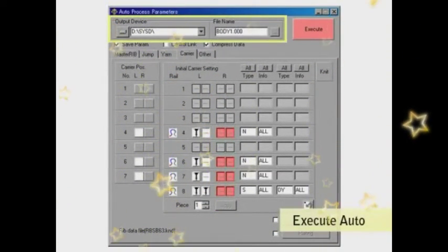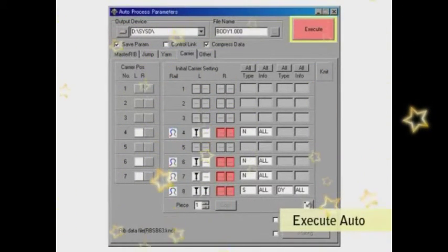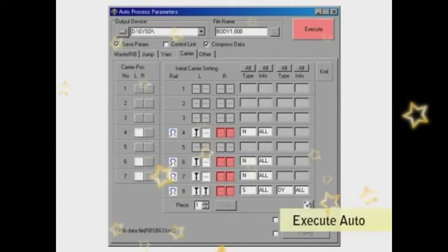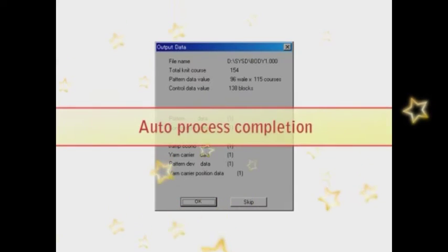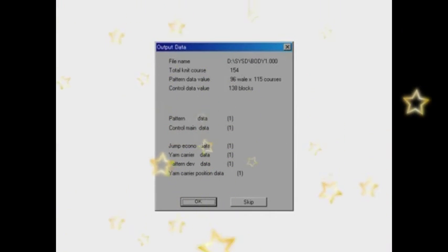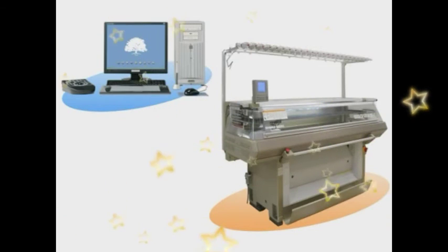Finally, set the output device and data name and then click Execute Auto to perform all the process. All the process is completed. Load the knit data created with SDS-1.